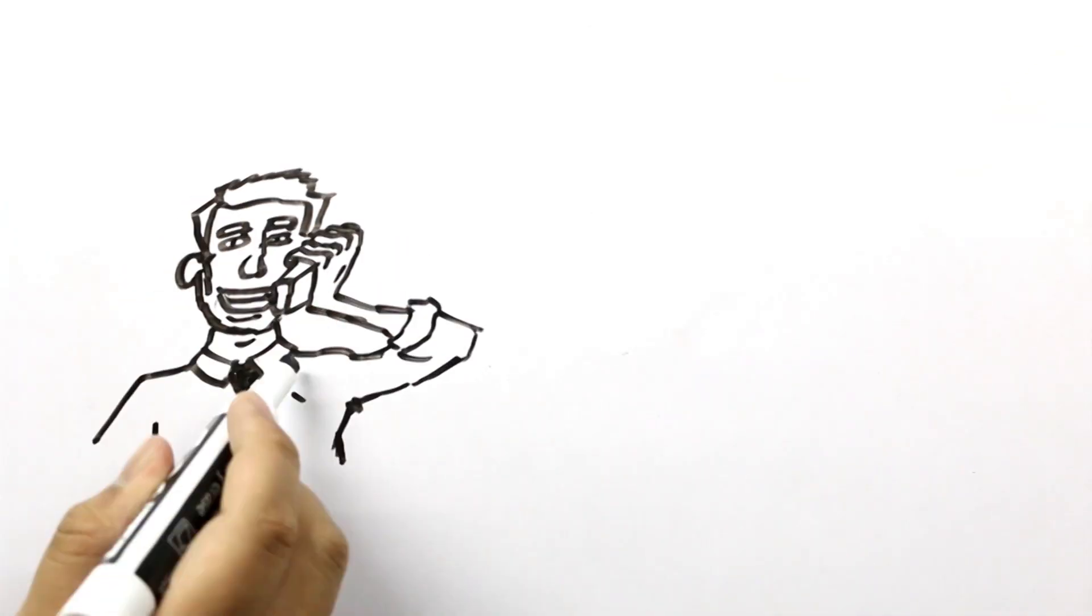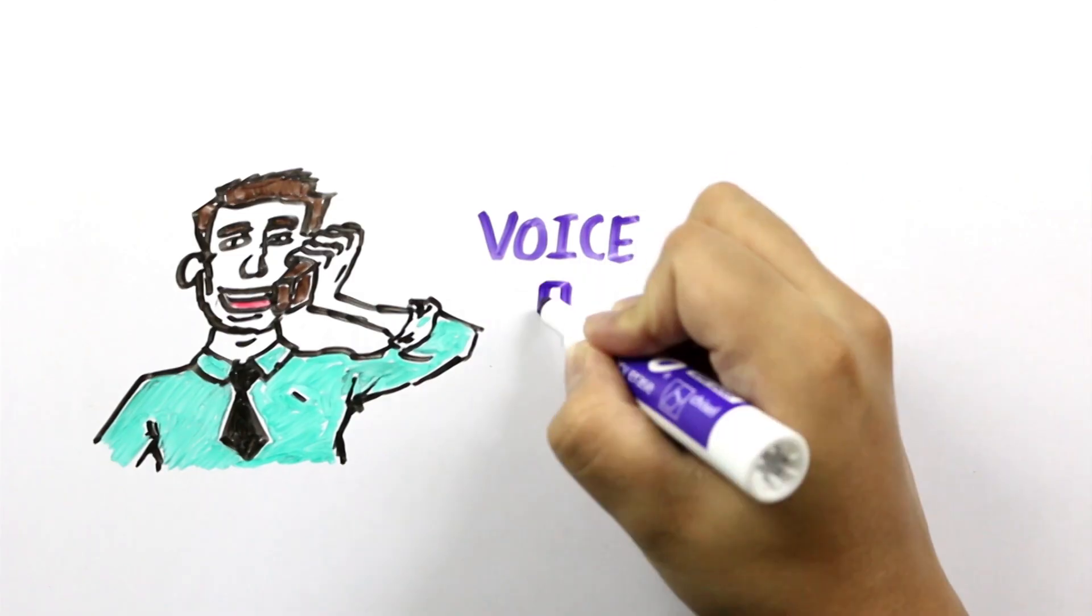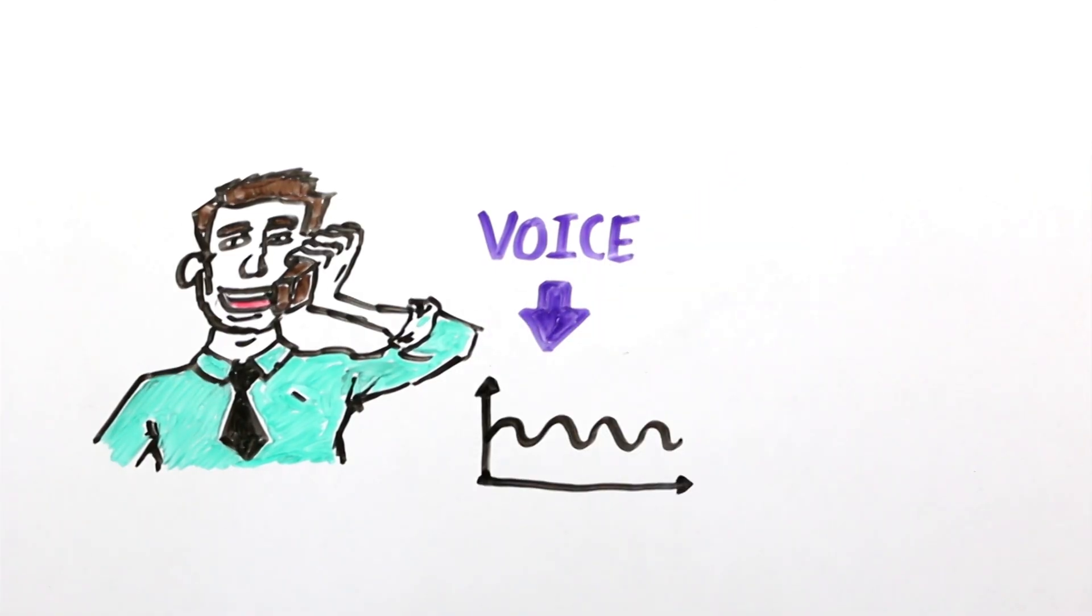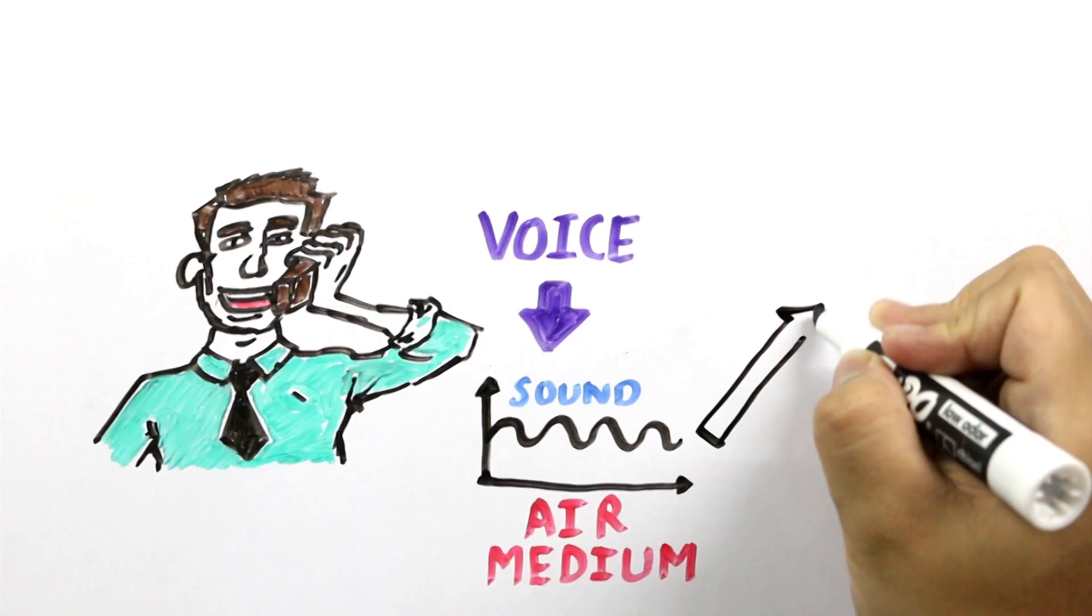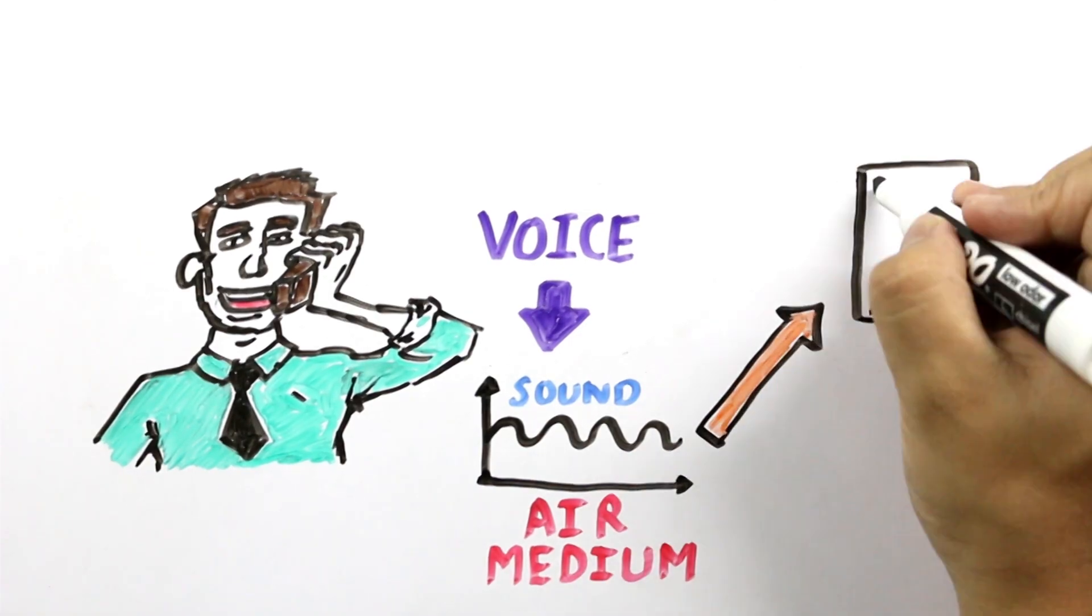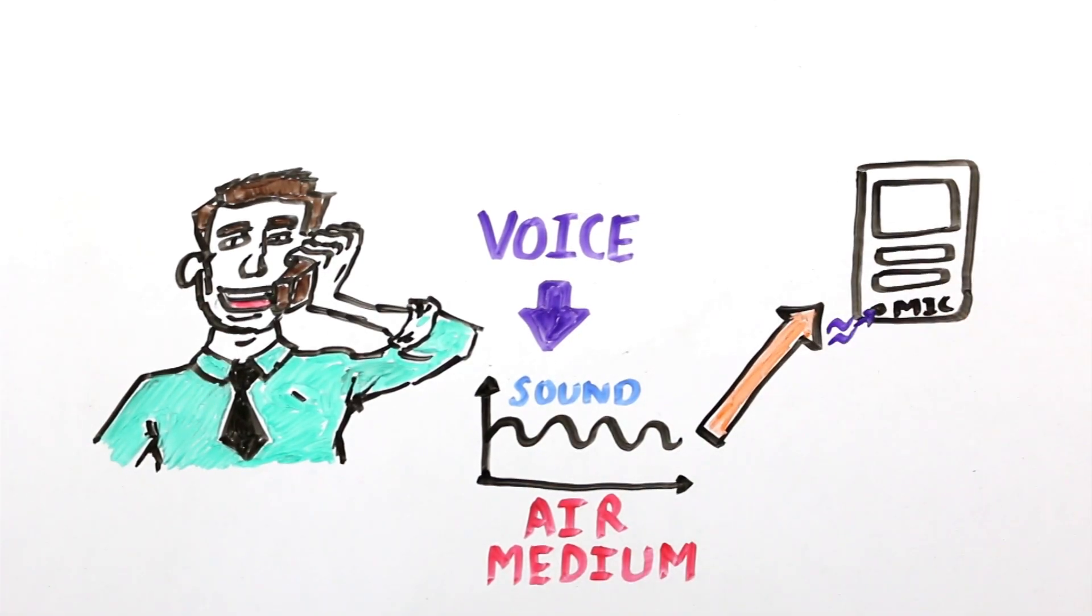Let's suppose I am talking to you on my cell phone. The sound of my voice is really waves of energy that travel through the air to the phone's microphone, which converts them into electrical signals. The sound waves and the signals are both continuously varying waveforms.